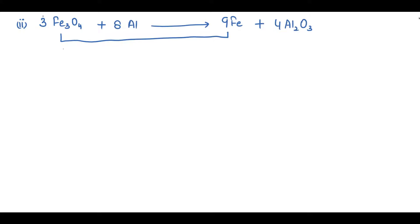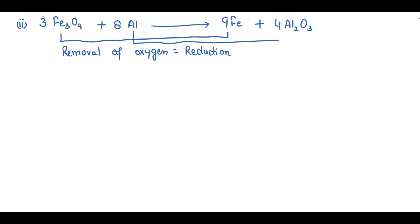Removal of oxygen causes the opposite of oxidation — that is, reduction — in the case of iron. Now if you see aluminum: on the reactant side we are not having oxygen, but on the product side there is addition of oxygen to aluminum.